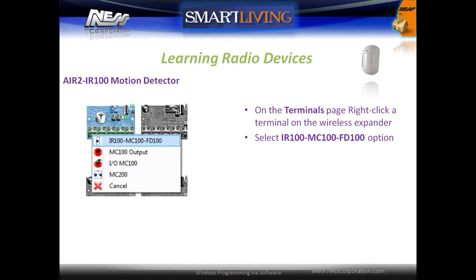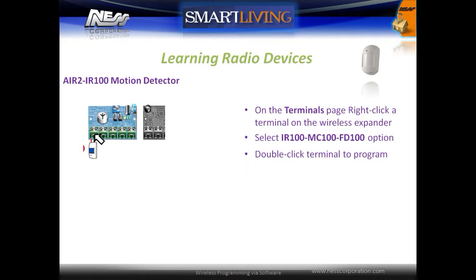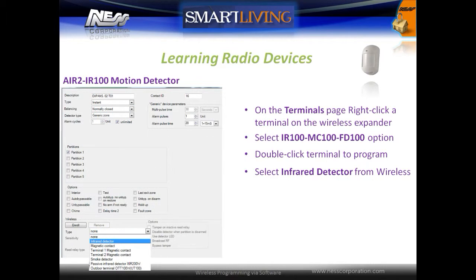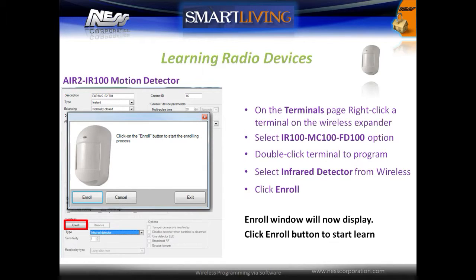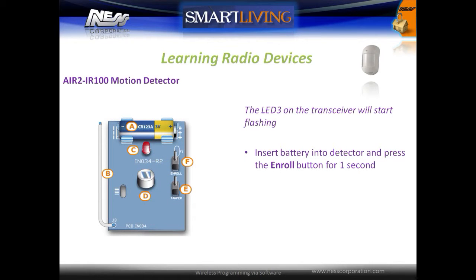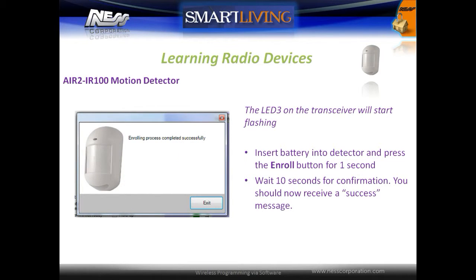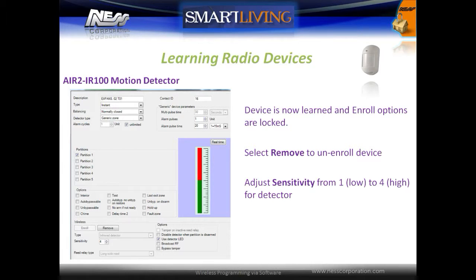On the terminals page, right click on a terminal on the wireless expander to enroll the sensor into, and select the IR100 option. Double click the terminal to open the programming window. Under the wireless programming section, select the type as infrared detector. Click the enroll button to enroll the detector. Once the system is in enroll mode, the transceiver's LED 3 will start to flash — press the enroll button on the device. After about 10 seconds, a message should confirm that the device was enrolled successfully. The device is now learnt and the enroll options are locked. Adjust the sensitivity of the detector if required, between 1 and 4.